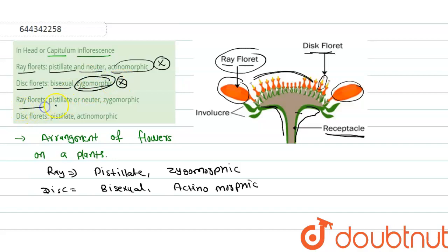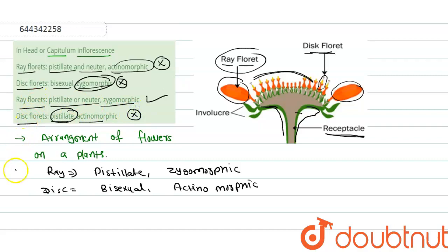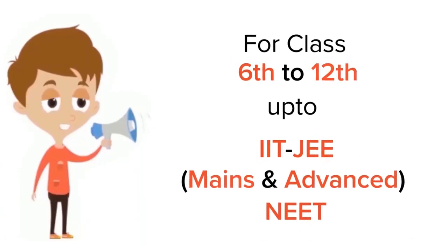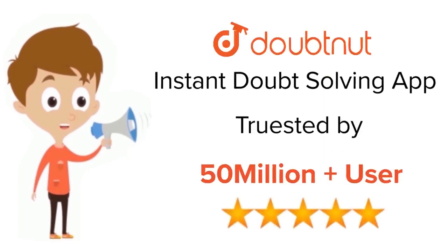The second option says ray florets are pistillate or neuter and zygomorphic — that is the correct part — but disc florets are described as pistillate and actinomorphic, which is wrong because disc florets are bisexual, not pistillate. So only the third option is the right answer. I hope you understand this solution. Thank you.